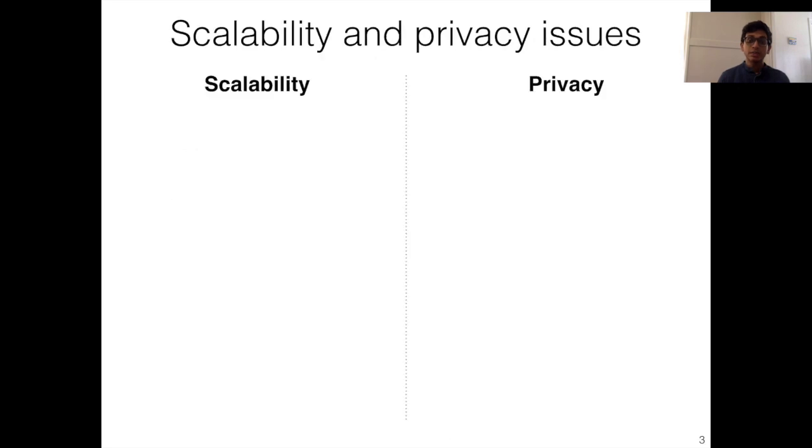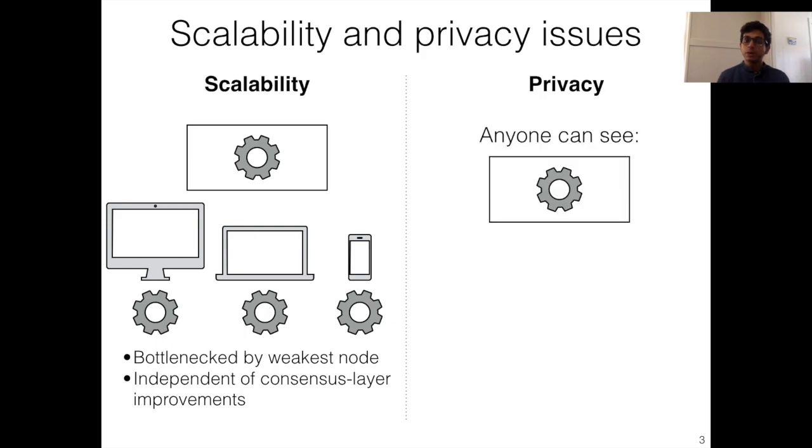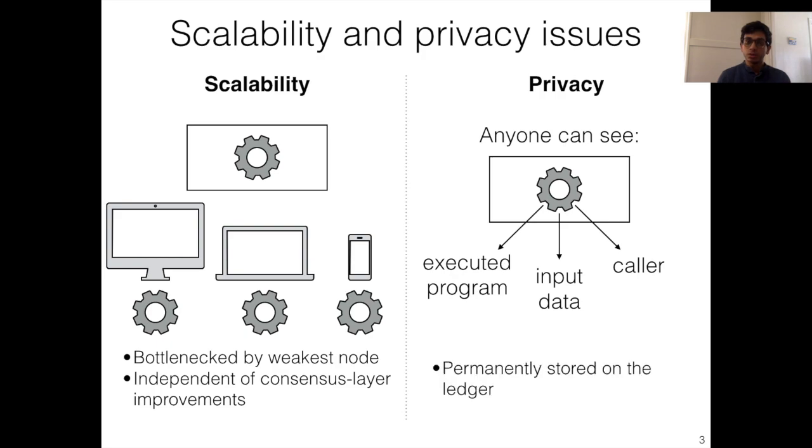Now, this has implications for both the scalability and privacy of the system. From a scalability perspective, the problem is that if your network consists of nodes which have different computing power, then transaction verification is bottlenecked by the weakest node. From a privacy perspective, the problem is that the transaction reveals information about the executed program, the input data, as well as who invoked that program. And this information is stored on the ledger permanently, so anybody can look at it and retrieve it even 100 years down the line.